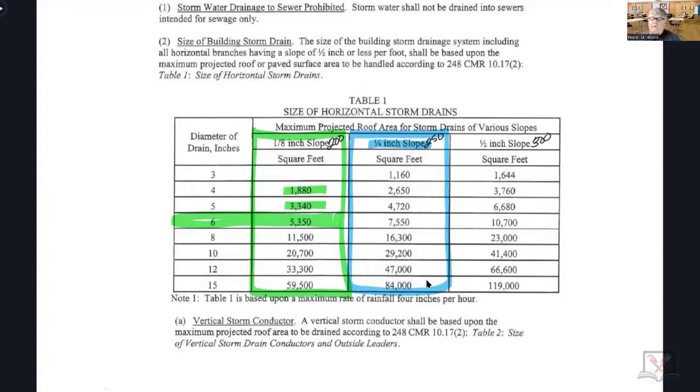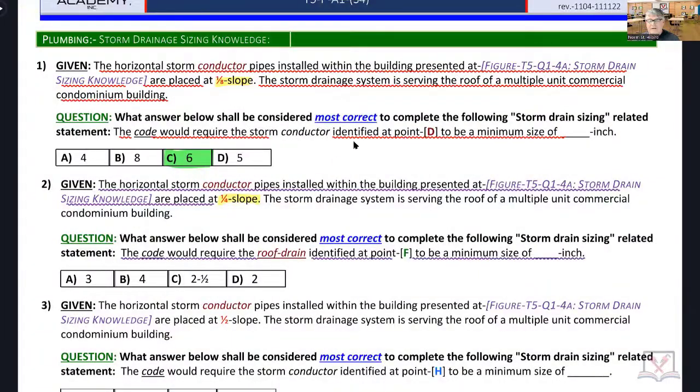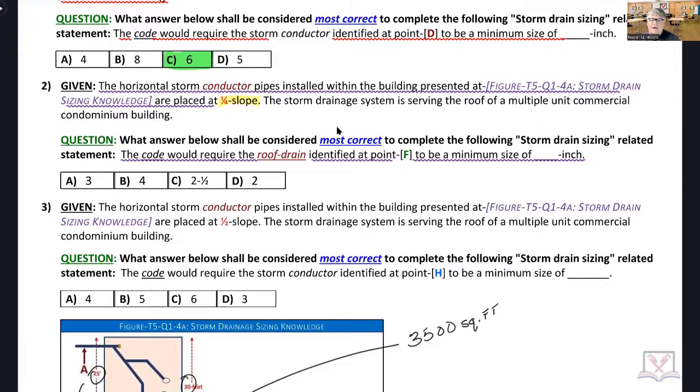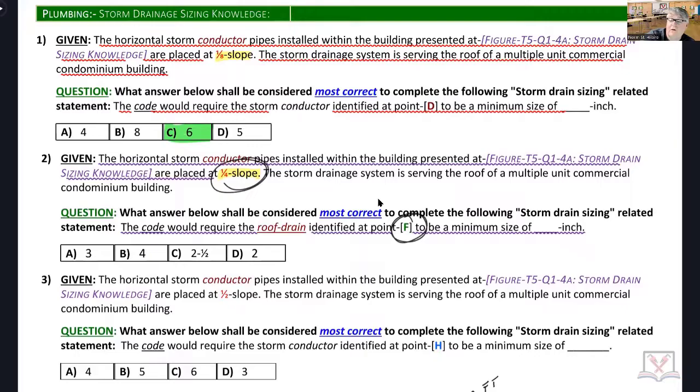Was the slope important? Did the slope mean anything to you in question two? The slope meant nothing, but it was there. It had nothing to do with sizing pipe F in this question because pipe F was pointing directly at the circle, which represents the roof drain. The water is going to go down the roof drain vertical before it goes horizontal. It was just a distractor, pushing some of you into table one when you truly needed to be in table two.